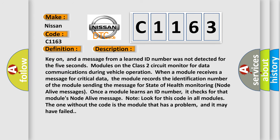The basic definition is: No communication with rear wheel steering control module. And now this is a short description of this DTC code. Key on, and a message from a learned ID number was not detected for 5 seconds. Modules on the class 2 circuit monitor for data communications during vehicle operation. When a module receives a message for critical data, the module records the identification number of the module sending the message for state of health monitoring node alive messages.